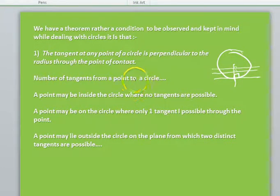Number of tangents from a point to a circle. A point may be inside the circle where no tangents are possible. A point may be on the circle where only one tangent is possible through the point and a point may lie outside the circle on the plane from which two distinct tangents are possible.